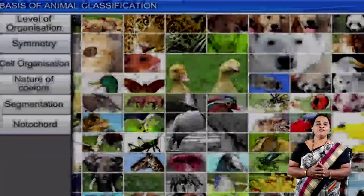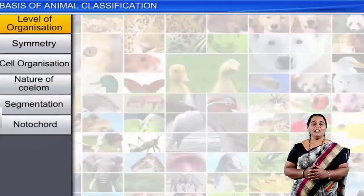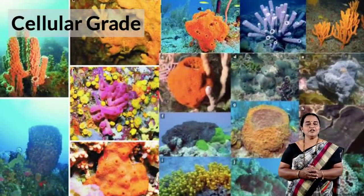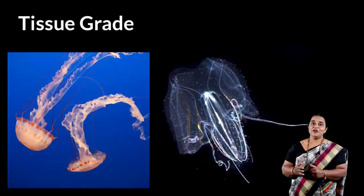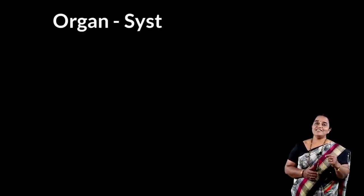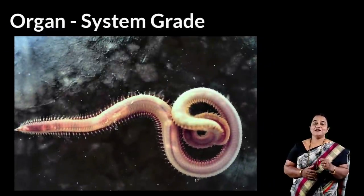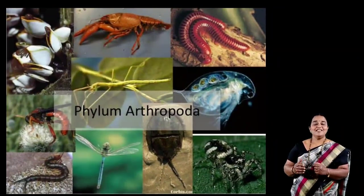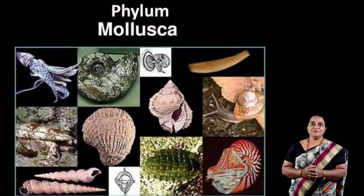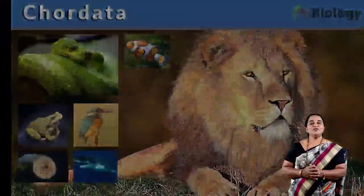Let us take a summary of basis of classification. Animals have levels of organization — there are four levels. Cellular grade, in which poriferans (Sponju Pranigalu) are included. In tissue grade, we include coelenterates and ctenophorans (Kutuku Kanavantagalu). In organ grade of organization, we include flatworms. In organ system grade, we include aschelminthes, annelids (Valyankitagalu), arthropodans (Sandipadagalu), molluscs (Mrudvangigalu), echinoderms (Kandakacharmigalu), and chordates (Kasharukugalu).